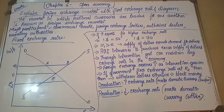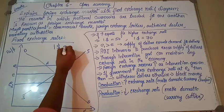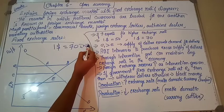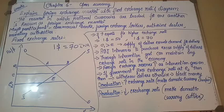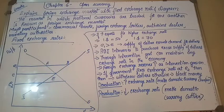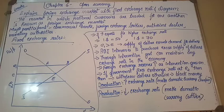First of all, what is a foreign exchange market? Exchange rate is one currency buying another country's currency. For example, one dollar is equal to 70 rupees. The market in which national currencies are traded for one another is known as the foreign exchange market.